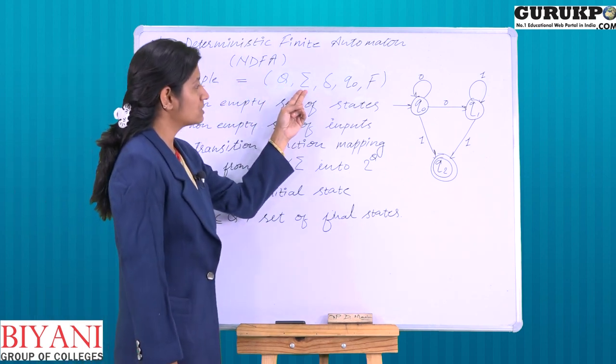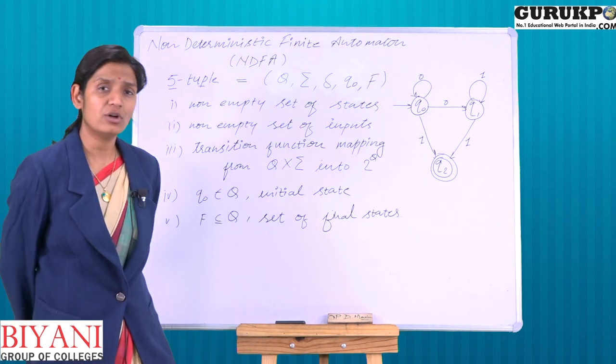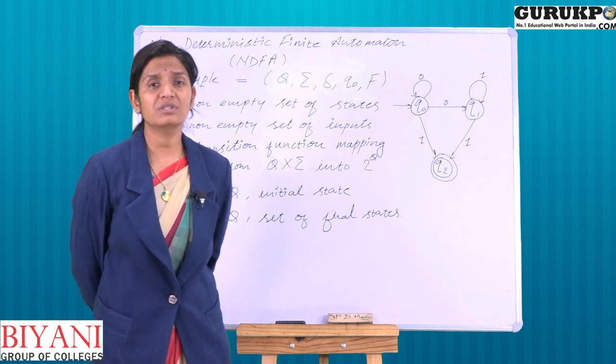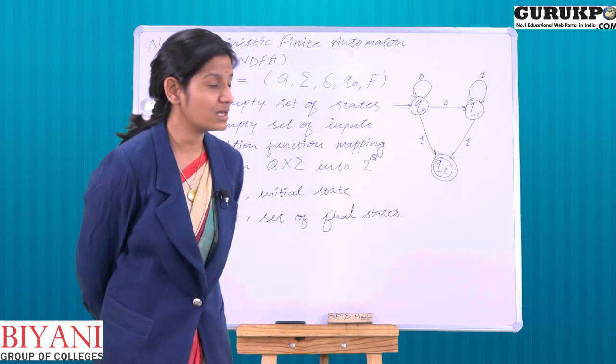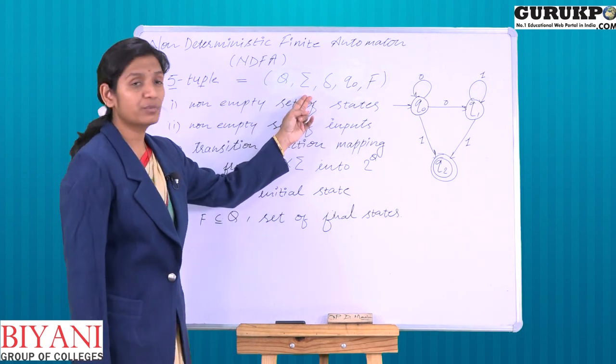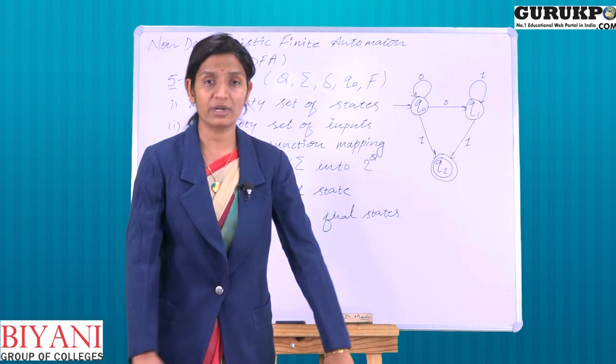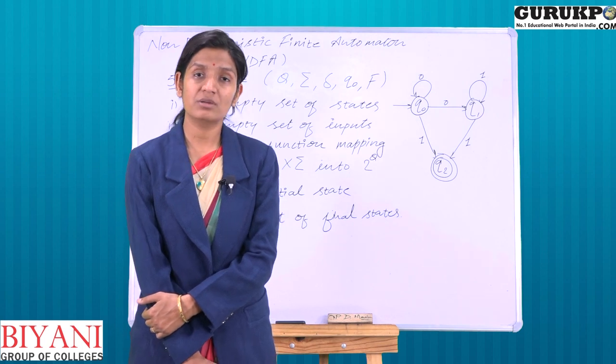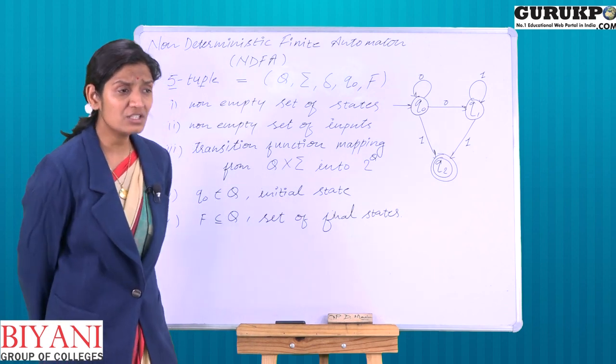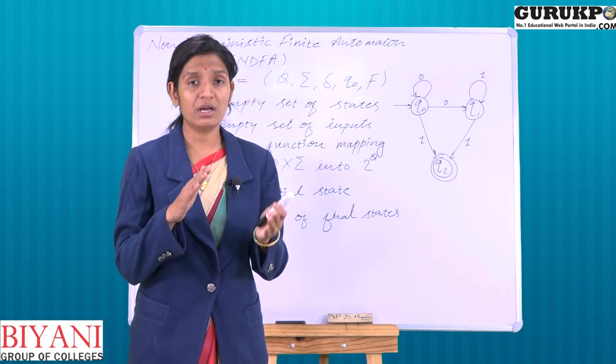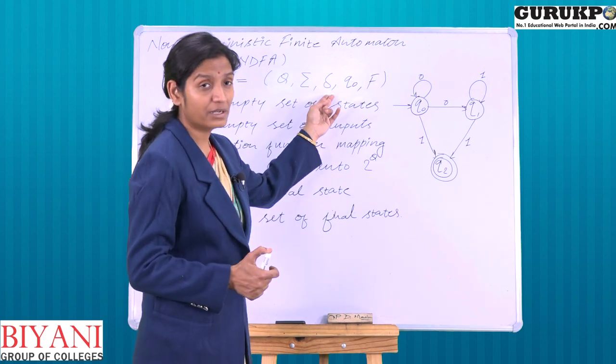Capital Q is the non-empty set of states in which we have all states in NDFA. Second is the set of input symbols, in which we put all the input symbols. Third is the transition function, which represents what could be the possible next state using delta.